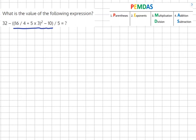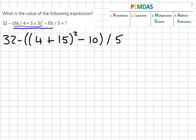So as always we start off with parentheses, and as we can see here we've actually got brackets inside of brackets. We always start off with the inner section. So the equation becomes 32 minus 16 over 4, which equals 4, plus 5 times 3, which equals 15 squared, minus 10 over 5.